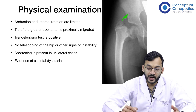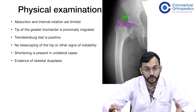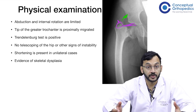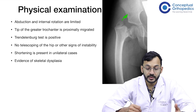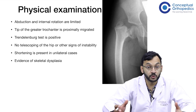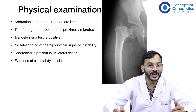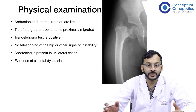The tip of the greater trochanter is at a higher level compared to the femoral neck, which is why the Trendelenburg test is positive. There is no telescopy because the femoral head is within the acetabulum, giving us a stable joint. Shortening is present only in unilateral cases because the other hip is normal.